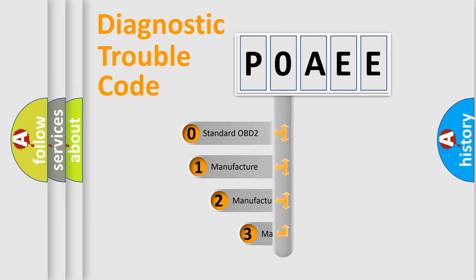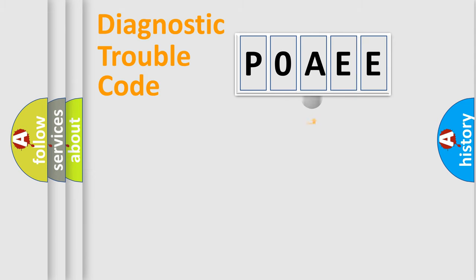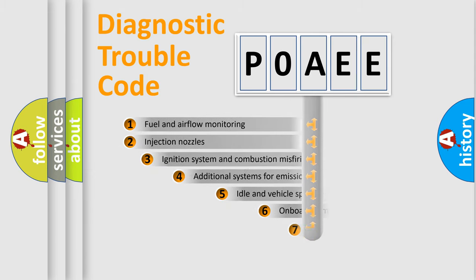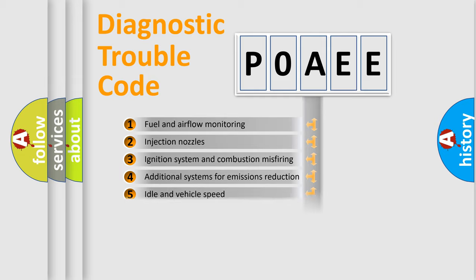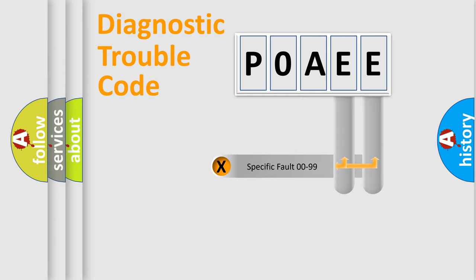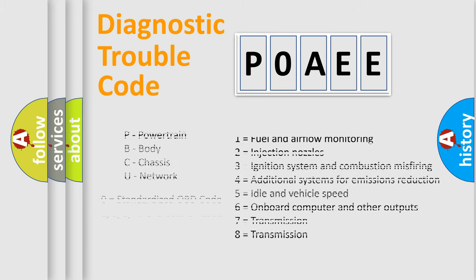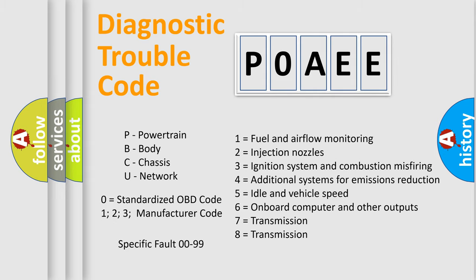If the second character is expressed as zero, it is a standardized error. In the case of numbers 1, 2, or 3, it is a more manufacturer-specific expression of a car-specific error. The third character specifies a subset of errors. This division is valid only for the standardized DTC code, and only the last two characters define the specific fault of the group. This division is valid only if the second character code is expressed by the number zero.